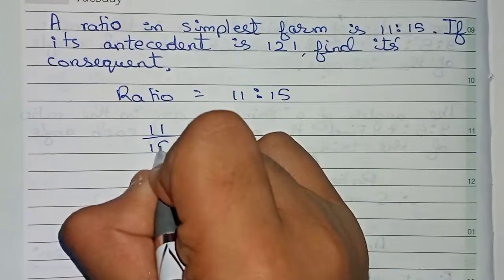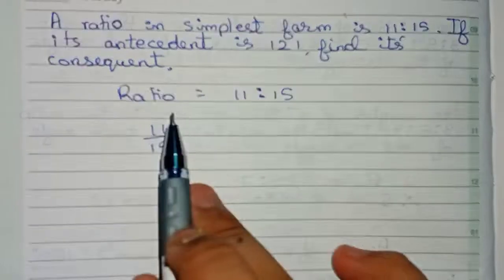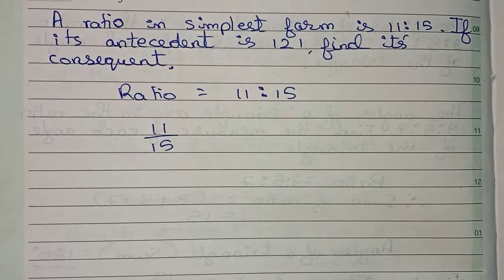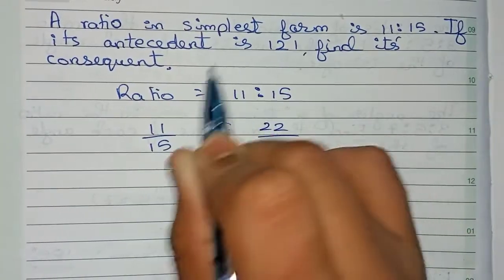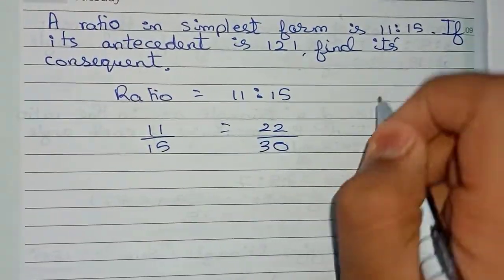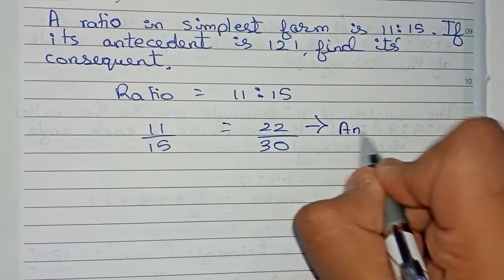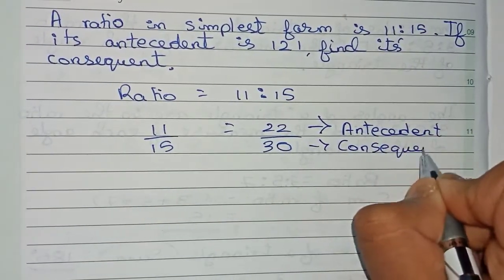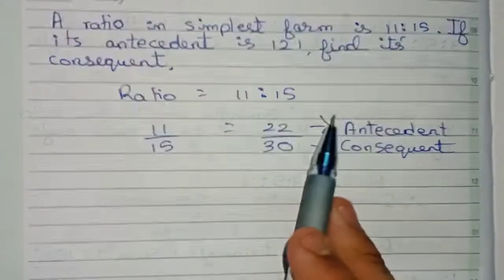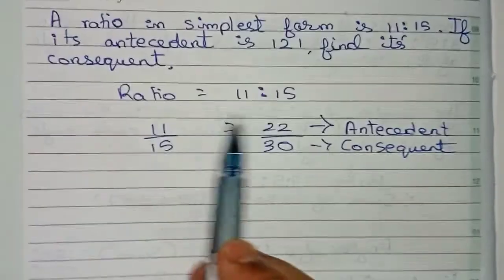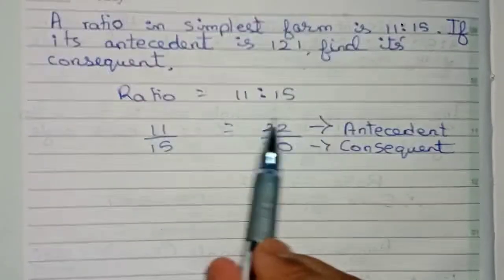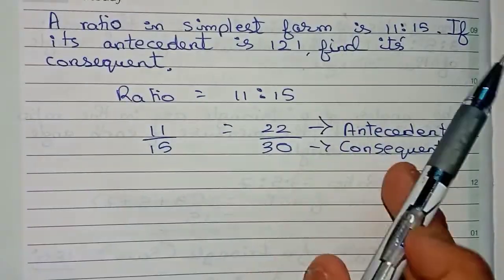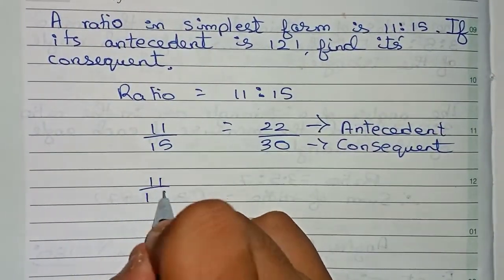First write the ratio in fraction form: 11 by 15. The extended form means if we multiply by 2 or 3, it will become 22 or 33. For example, if you multiply by 2, the upper part becomes 22 and the lower part becomes 30. This upper part is known as the antecedent and the lower part is known as the consequent. To expand 11 by 15, we must multiply both numbers by the same digit — we cannot multiply 11 by 2 and 15 by 3.